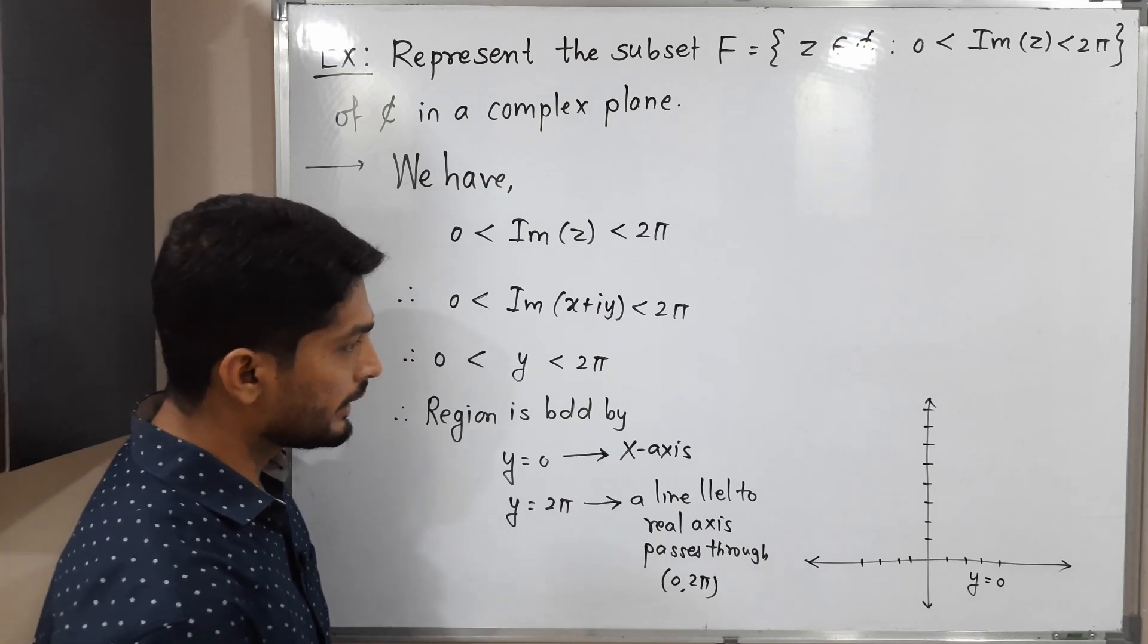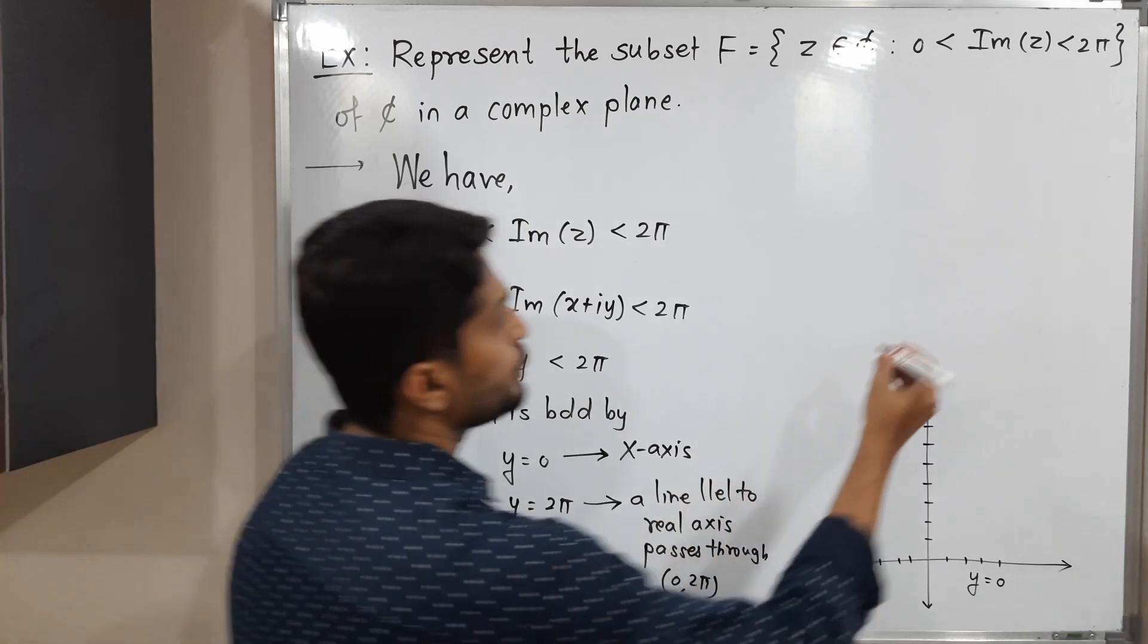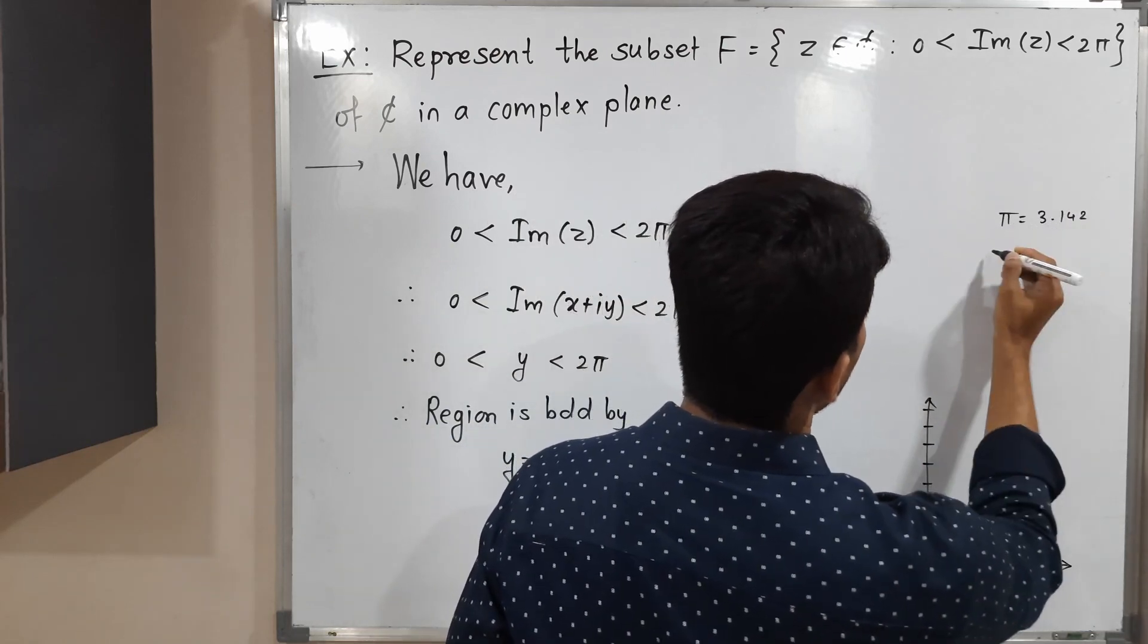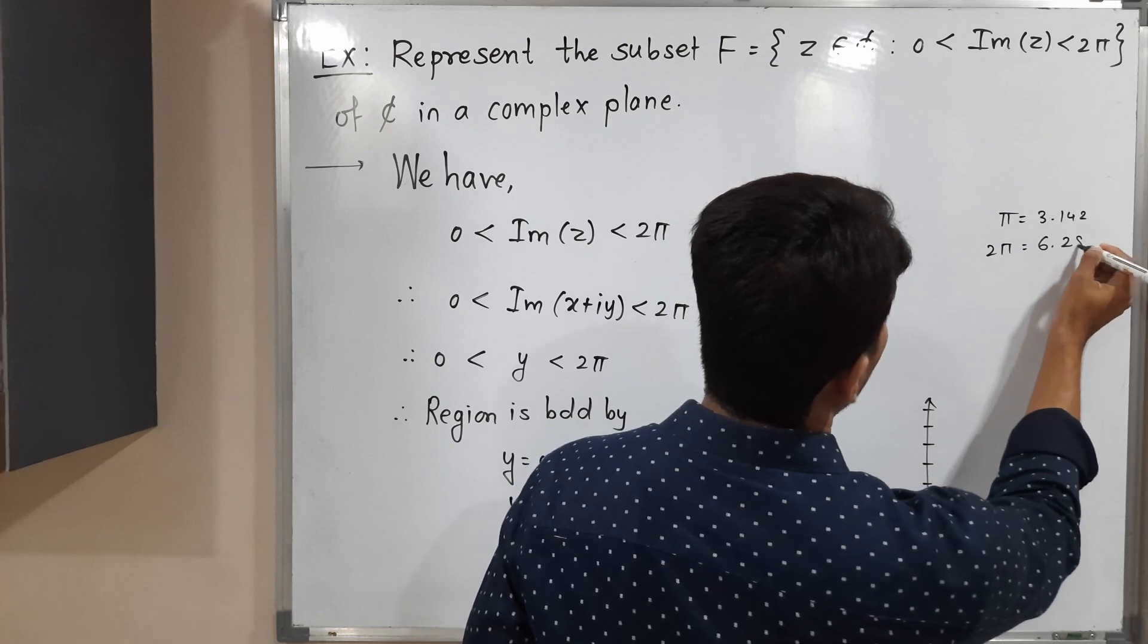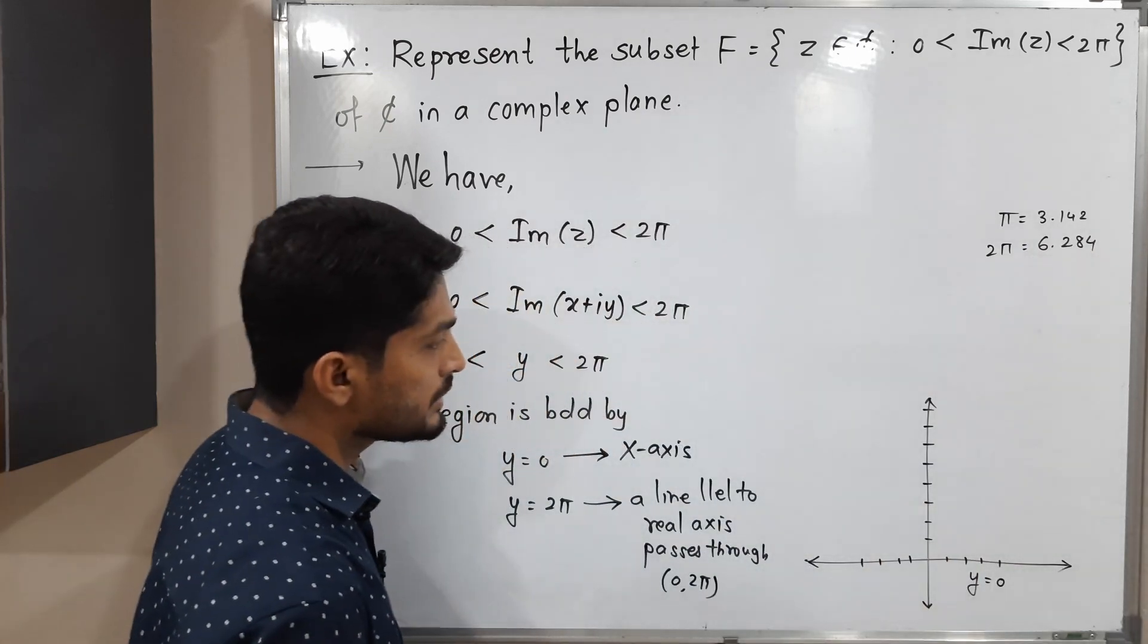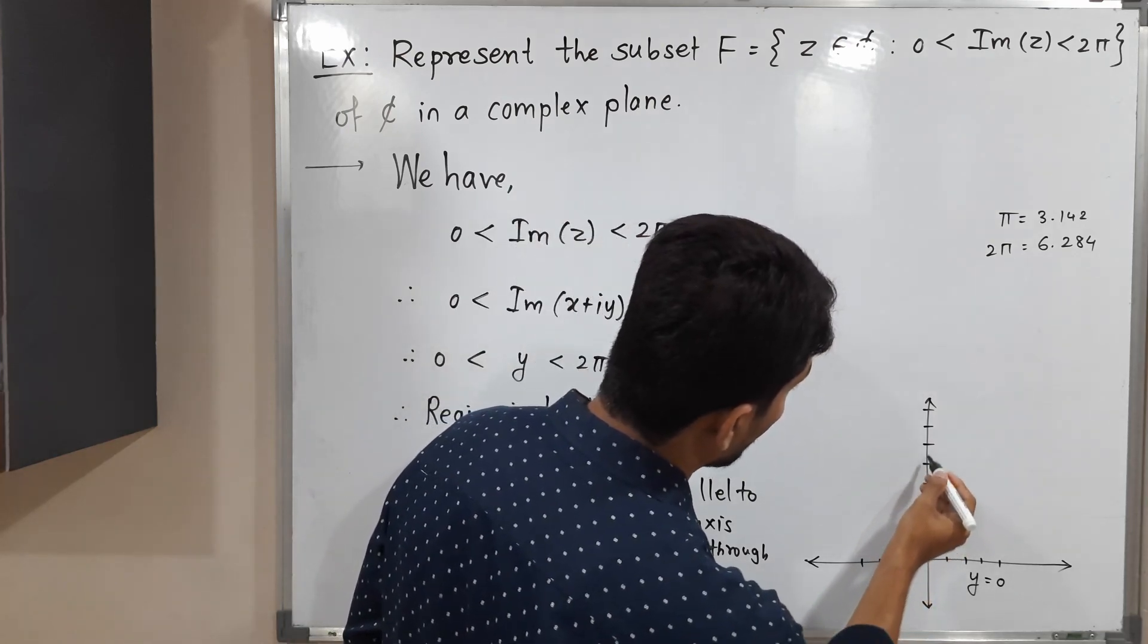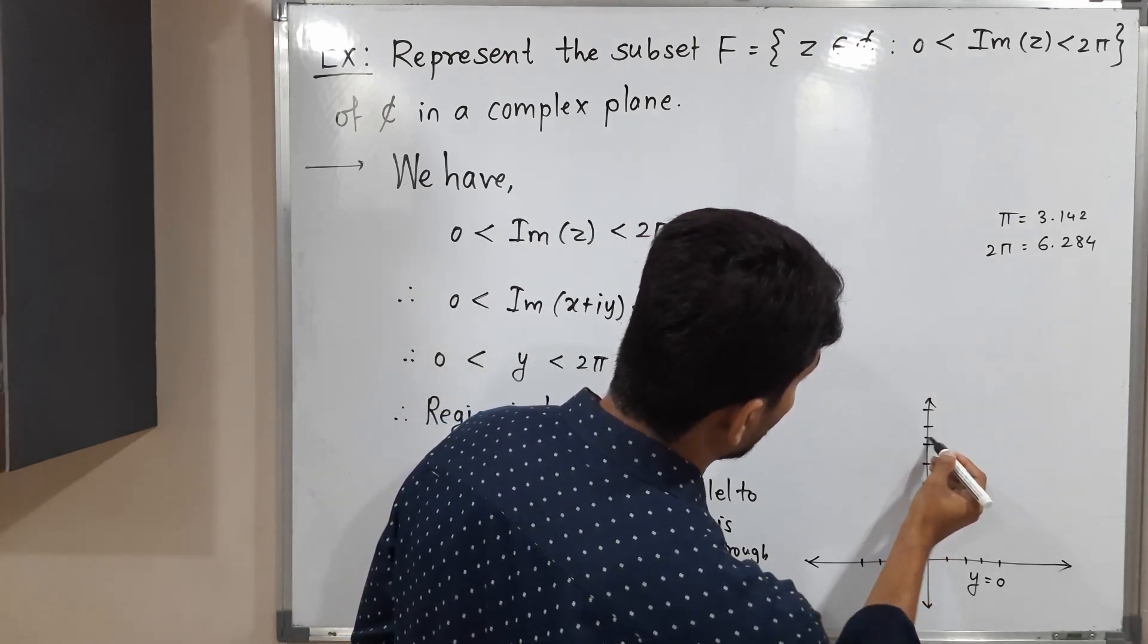Let me draw a line. You know that pi means 3.142, so 2π will be 6.284. So 6.284 will be somewhere here: 1, 2, 3, 4, 5, 6, it will be somewhere here.